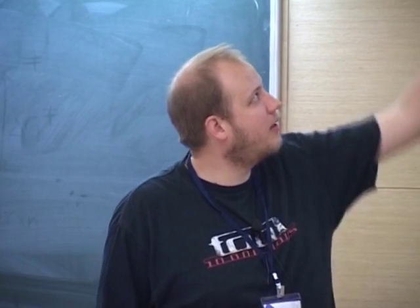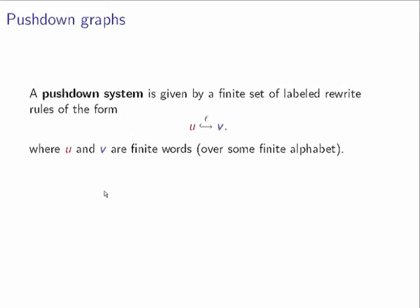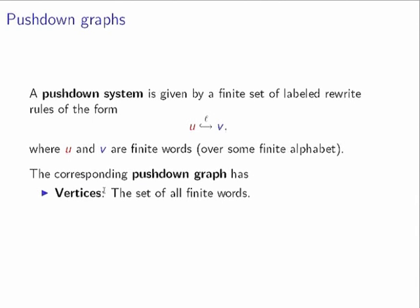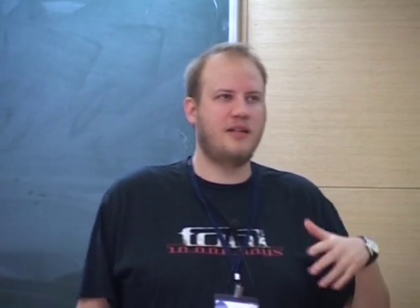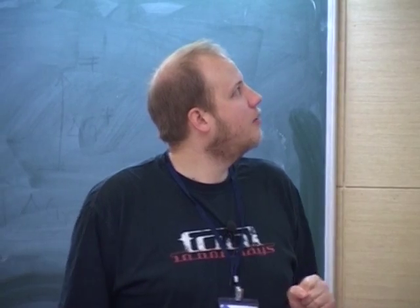A push-down system is a finite object — basically a finite set of rewrite rules. You have finite words, denoted by u and v, and a finite set of rewrite rules where the left-hand side and the right-hand side are both finite words. These rules induce an infinite transition system. The set of states of this infinite transition system are basically the set of all finite words.